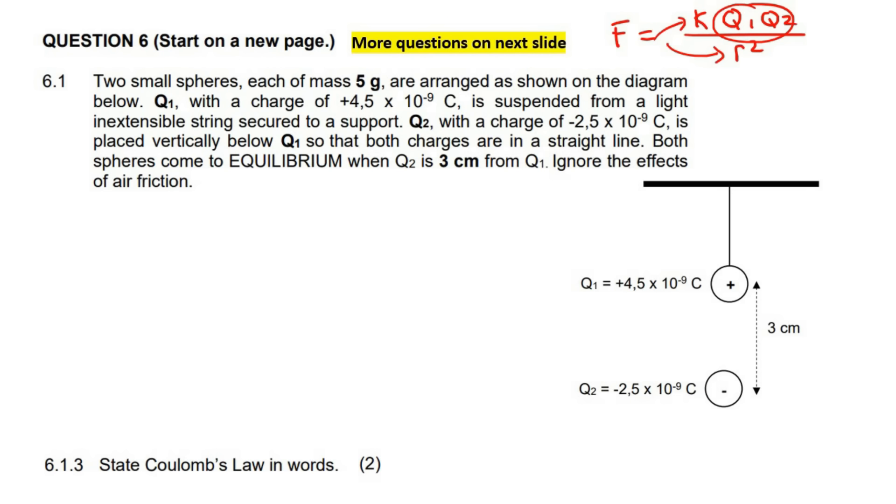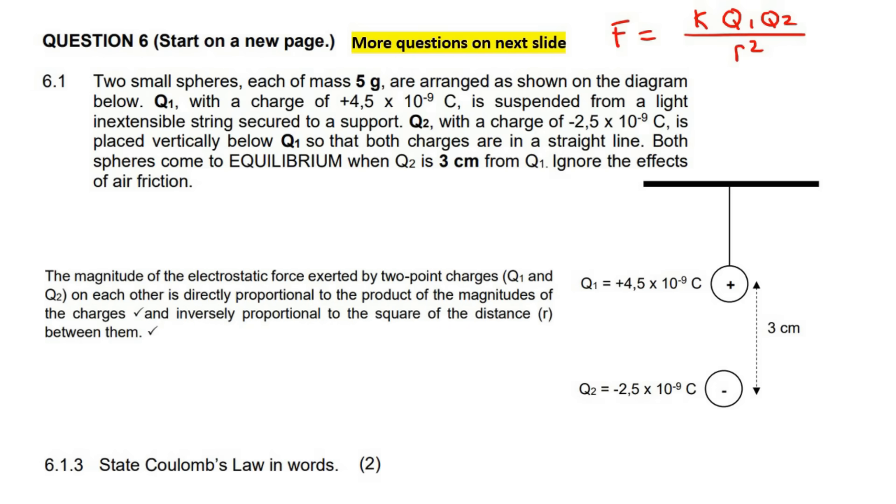To the square of the distance between them. We don't really say distance between their centers because these electrostatic charges or spheres that we are looking at are so small that it doesn't even make sense to mention their centers. Whether you are looking at the distance from there to there or center to center, it's going to be the same because these things are so tiny. So we don't worry about the radius and the centers. We just say the distance between them. The magnitude of the electrostatic force exerted by two point charges on each other is directly proportional to the product of the magnitudes of their charges and inversely proportional to the square of the distance between them.